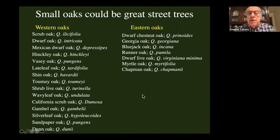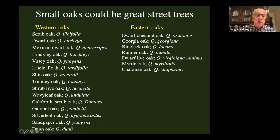There are lots of small oaks we could use — we've got to get more of them into the marketplace. In the East, dwarf chestnut oak is the most common one you can buy, Quercus prinoides. Georgia oak is in and out of the trade in the South, and there are several more options in the West — some are actually ground covers.